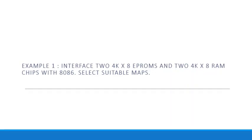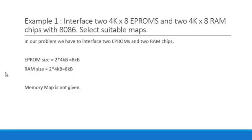We are going to discuss a problem: interface two 4K×8 EPROMs and two 4K×8 RAM chips with 8086, and select suitable memory maps. We have two 4KB EPROM chips and two 4KB RAM chips, so the total size of EPROM is 8 kilobytes and the total size of RAM is 8 kilobytes. The memory map is not given; we have to select suitable maps.